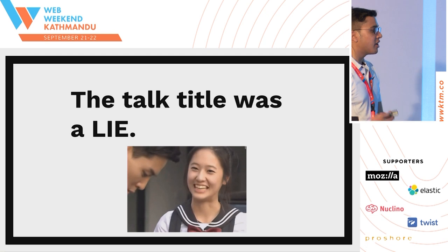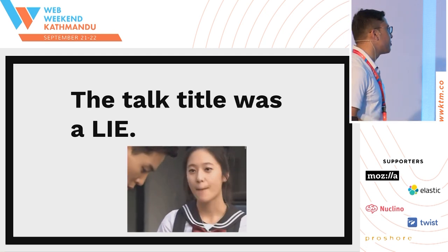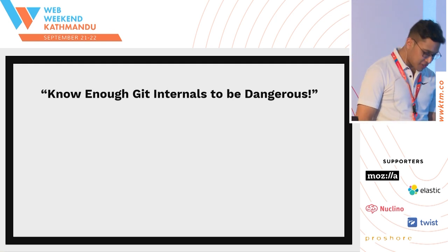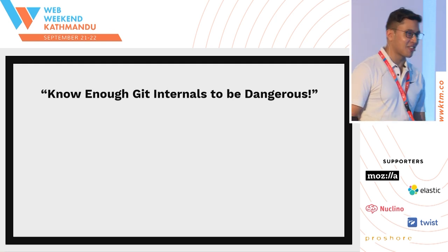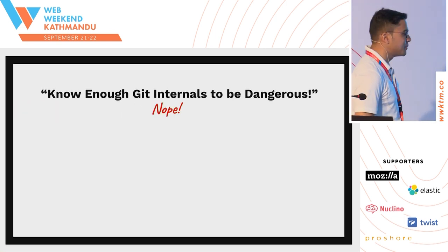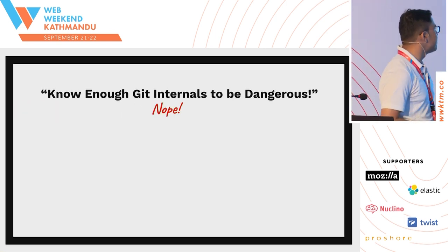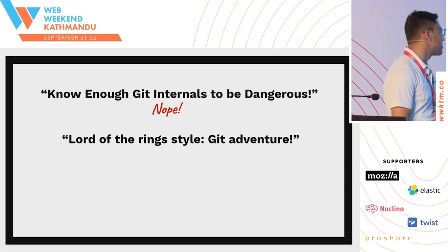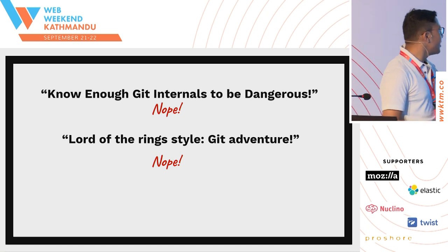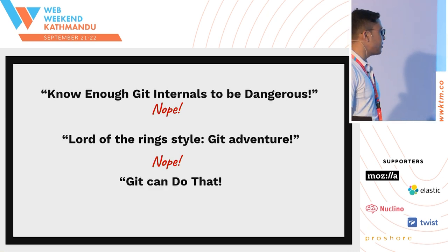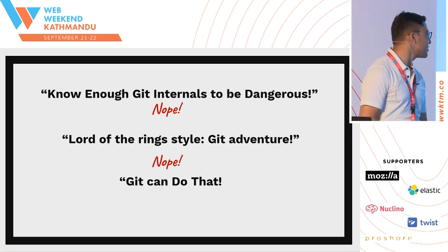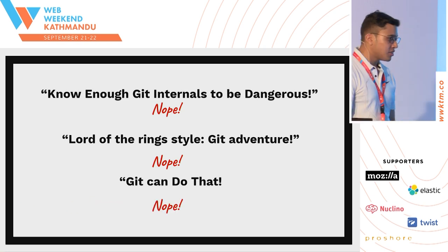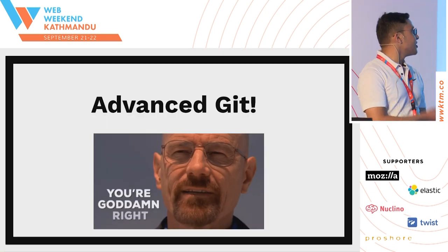I went through a lot of iterations before I came up with a perfect title. I thought of 'Knowing Git Internals to Be Dangerous' — nope. Then I thought of a Lord of the Rings style Git adventure, but I'm lazy. Then I thought of 'Git Can Do That', but seriously, Git can do everything — why mention only some things? So now the talk title is 'Advanced Git'.